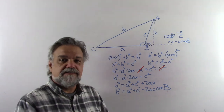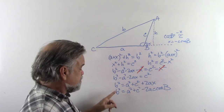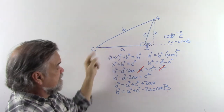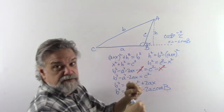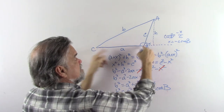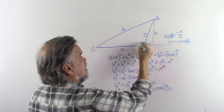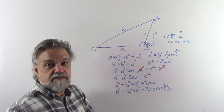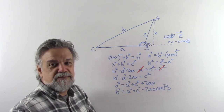And sure enough, that is exactly like what we got with the other two: a side squared equals the sum of the squares of the other two sides, minus 2 times those other two sides times the cosine of the opposite angle. That's what the law of cosines tells us — otherwise known as the cosine rule, or the cosine property.